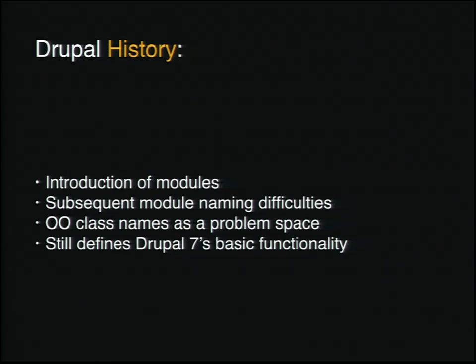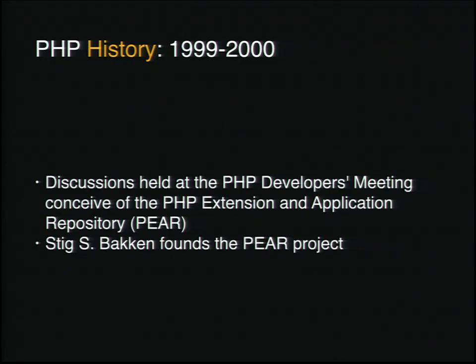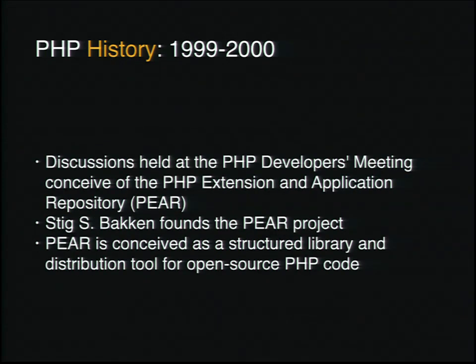So let's talk a little bit about PHP, because PHP was doing some interesting things during this time frame as well. In the 1999-2000 timeframe, there was a discussion at the PHP developers meeting that conceived of the PHP Extension and Application Repository, or what we commonly call PEAR today. Stig Bakken actually founds the PEAR project around this time. This is really just a structured library for open source PHP code — trying to be a distribution tool, a dependency management tool, that sort of stuff. It's an interesting note that very early on in the Drupal cycle, Drupal actually had an object-oriented database engine from PEAR. We removed that at some point.